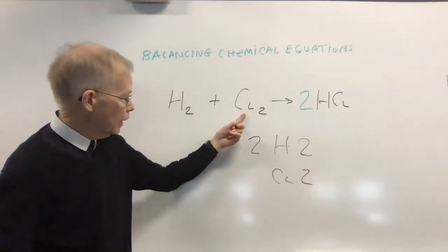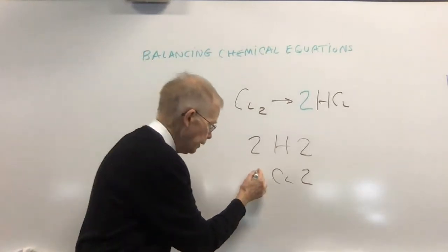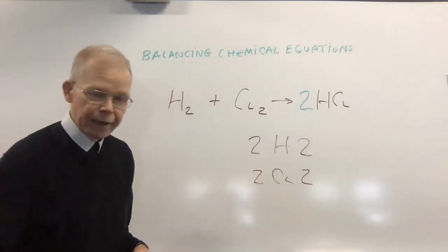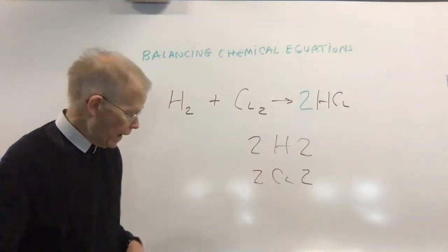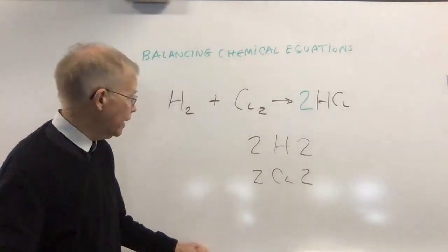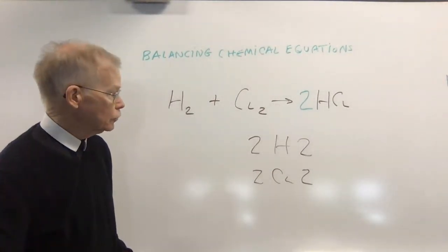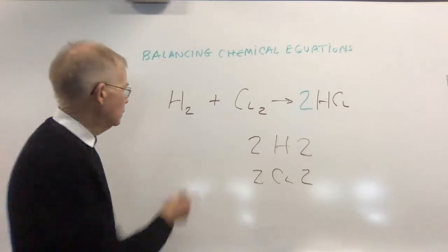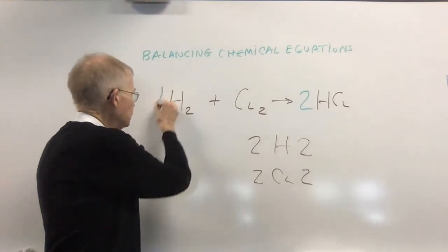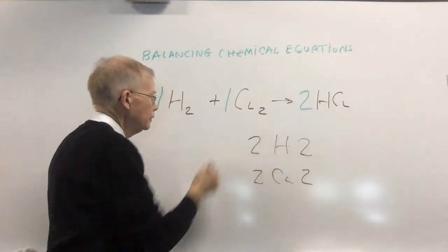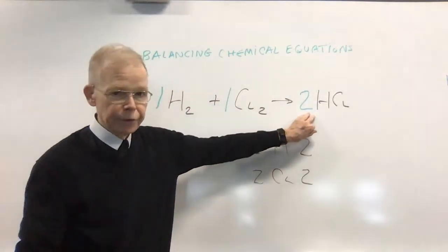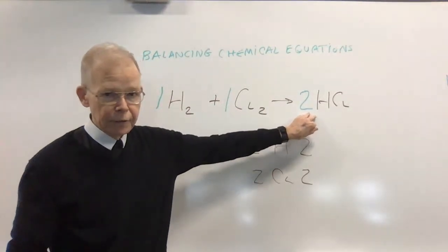And on this side, I have two Cls already, so I'll put a two there. So my reaction is matched. The total atoms on each side is two and two. I'll put coefficients here of one and one, and I already have the two in here to show that there are two hydrogen chlorides listed.